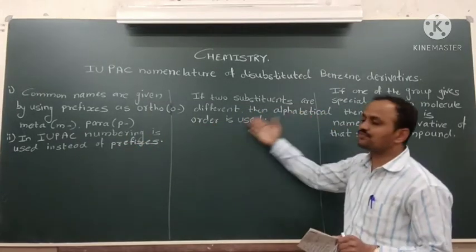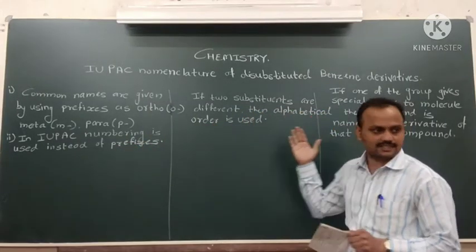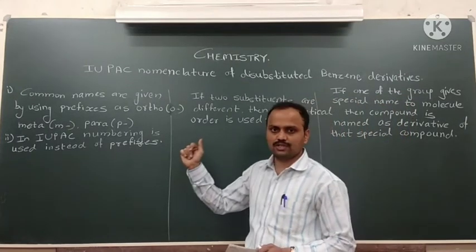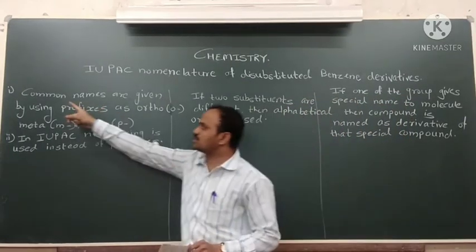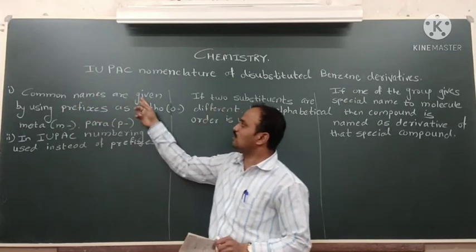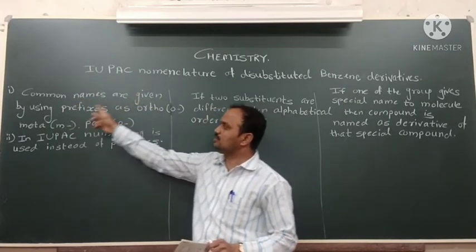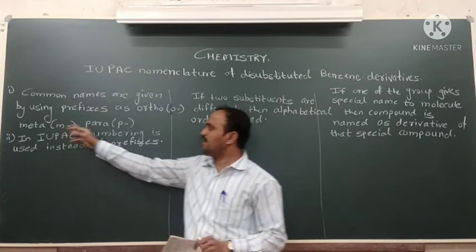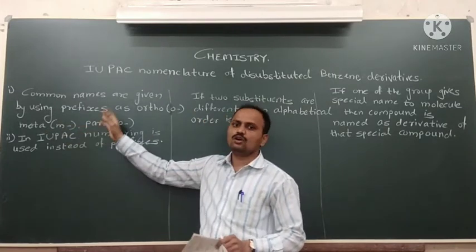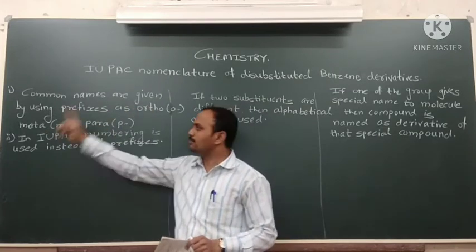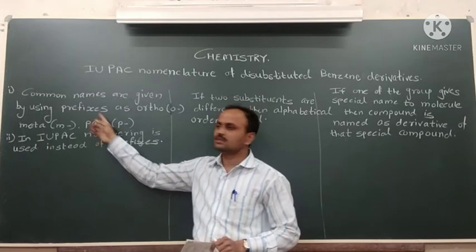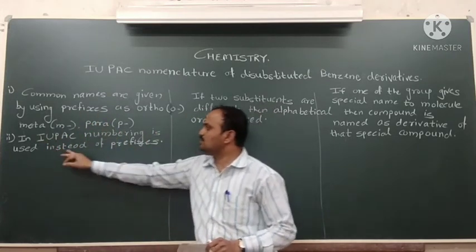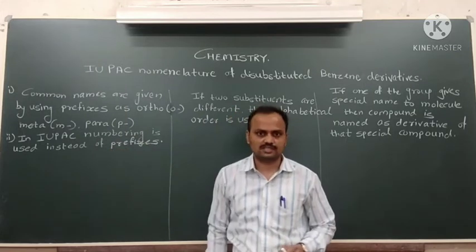We have three different categories for writing names of benzene derivatives. First, we will see common names. Common names are given by the prefixes ortho, meta, and para. In IUPAC nomenclature, numbering is used instead of these prefixes.